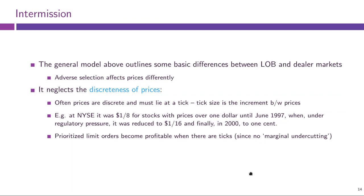This was the broad intuition for the Glosten model. In general, this model outlines the basic differences between order-driven markets and dealer markets. We see that adverse selection affects prices differently in the two scenarios. Given the same distribution and the same behavior of market-order traders, the price schedules generated by the limit order book differ from those a singular dealer would generate, because they can extract different information from observing any given transaction.